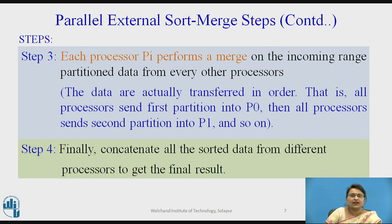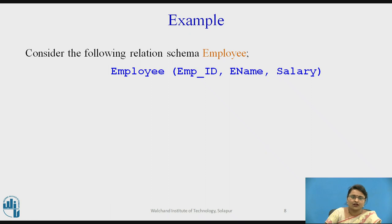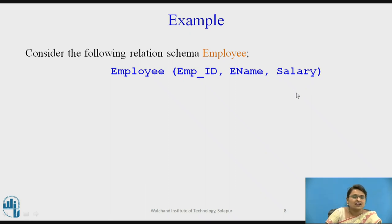Finally, we concatenate the results. Let us see this with a proper example. We consider an employee relation with three attributes: employee ID, employee name, and employee salary.